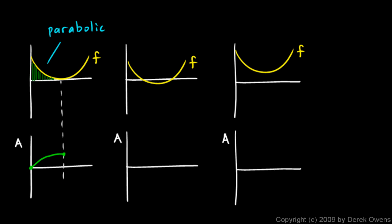If we continue to the right, past this point, the area starts to increase again very slowly at first because the value of f is very low, but then faster and faster as we move further to the right. So my area graph starts to increase like that — it has a slope of 0 right there just for one instant. And it turns out this is a cubic. If my original function here was parabolic, this one is cubic.